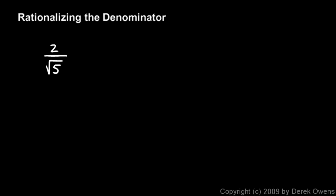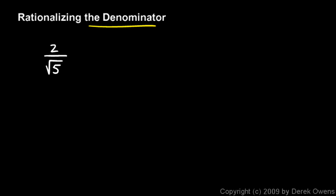Now we'll talk some more about rationalizing the denominator and look at several examples. In this first example we have 2 over the square root of 5, and this square root of 5 in the denominator is the problem. We're not allowed to have radicals in the denominator. 5 is not a perfect square, so the square root of 5 is an irrational number, and we want rational numbers in the denominator. That's why this is called rationalizing the denominator.